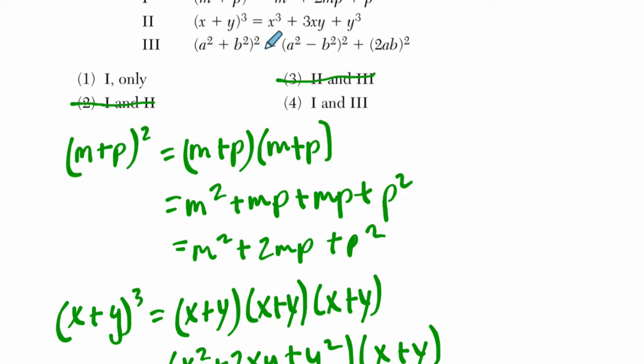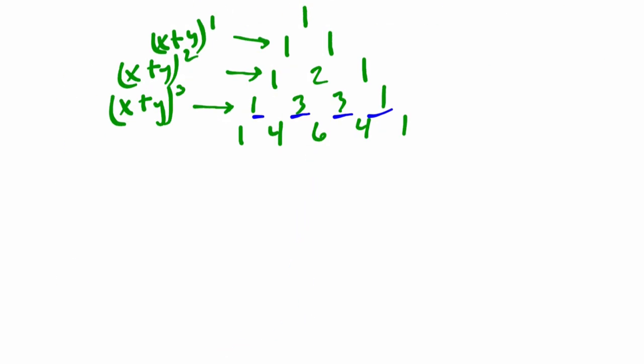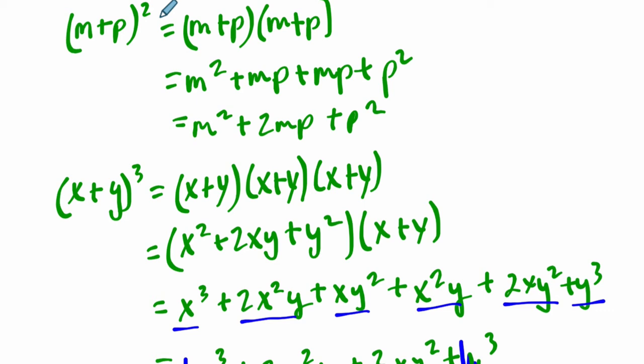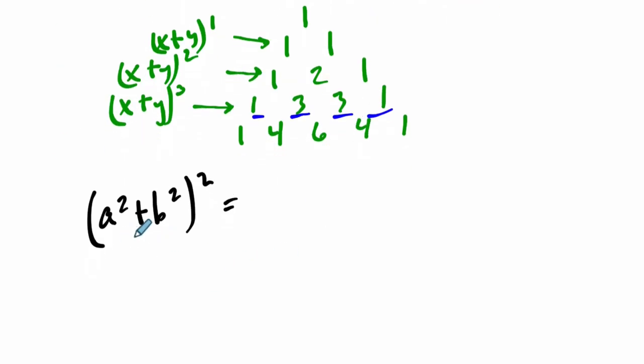But in the last problem here, we have (a²+b²)². Okay, so this one, I'm going to write out (a²+b²)². Now, before we think about this on its own, think about it in connection to what you've done so far. (m+p)² is m² + 2mp + p², right? So we can use that idea here. Instead of m and p, we have a² and b². So it's going to equal (a²)², just like it was m², plus 2 times a²b², plus (b²)².